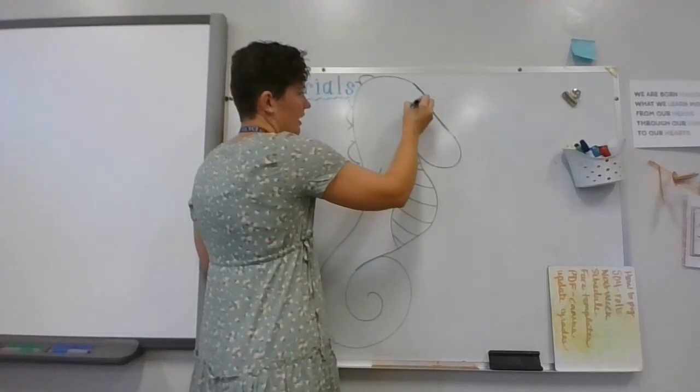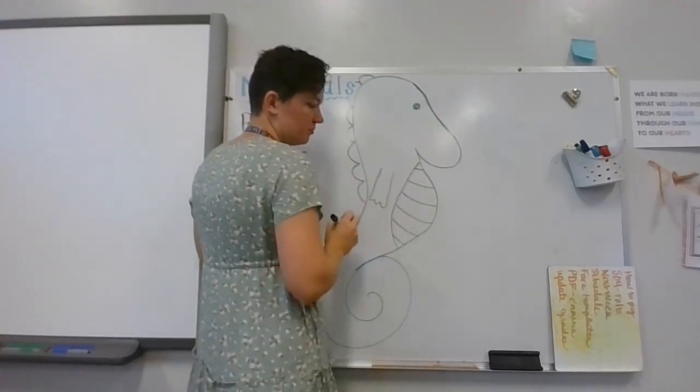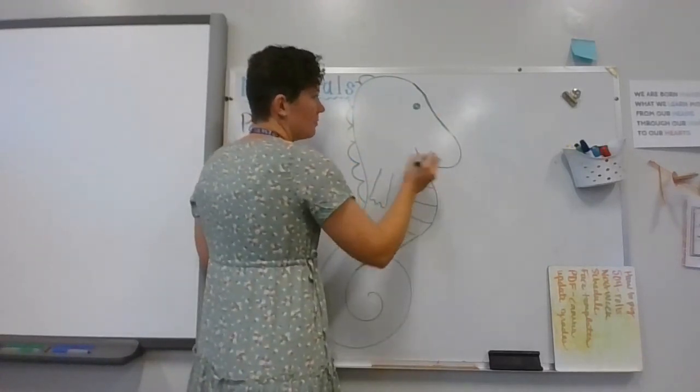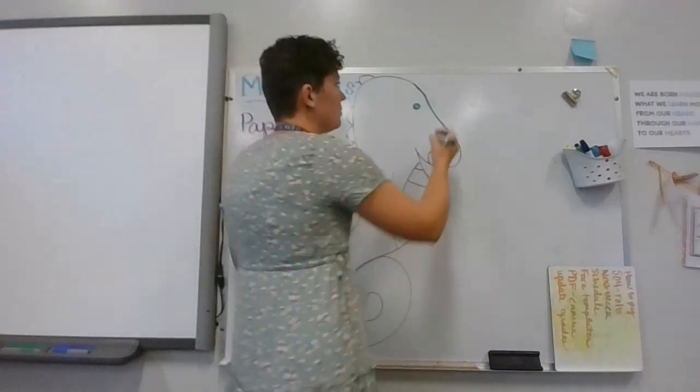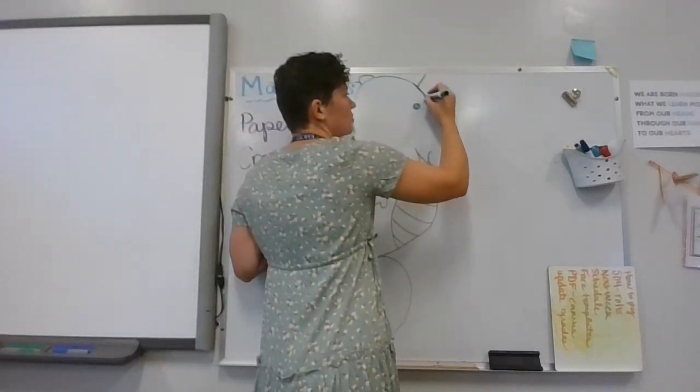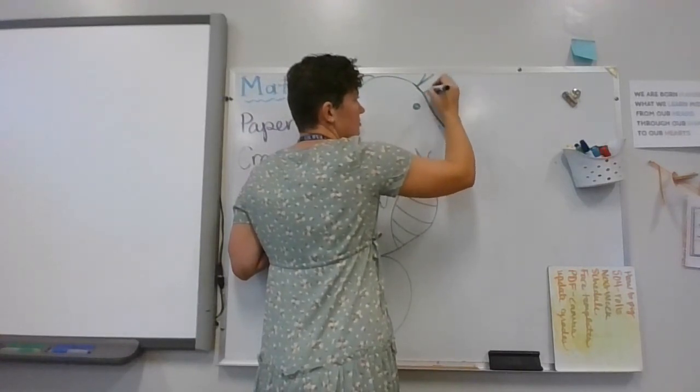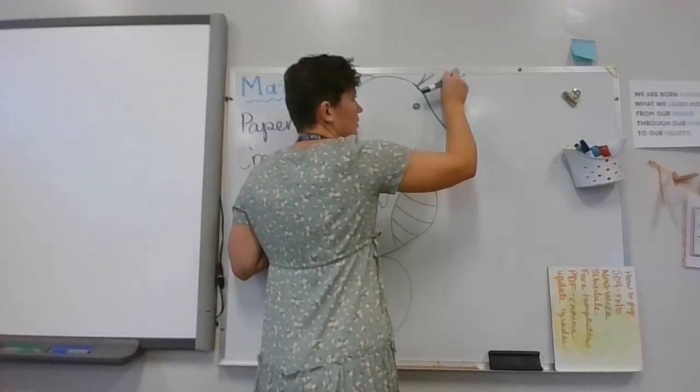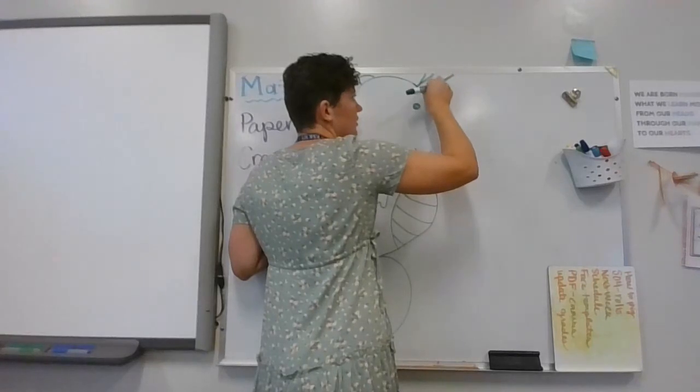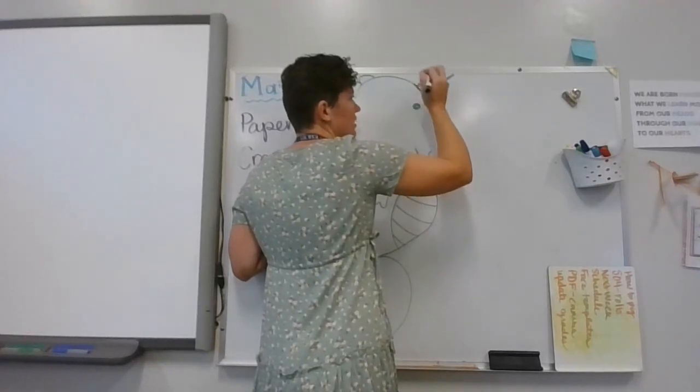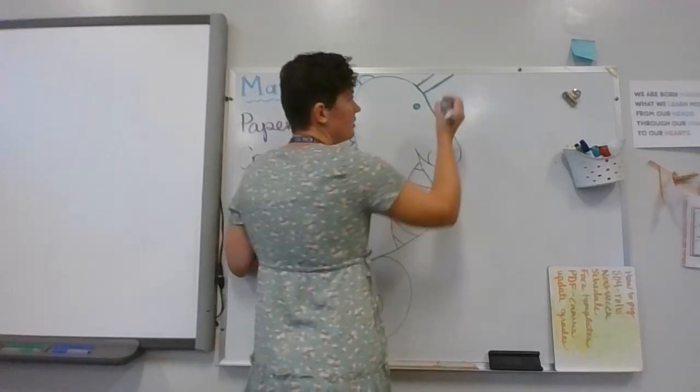I'm going to give it an eye—just a circle—and a smiley mouth. Then the most important part is the unicorn horn. My unicorn horn is going to go off the edge of my whiteboard, so you won't be able to see all of it because I made my unicorn too big.